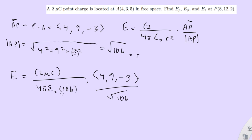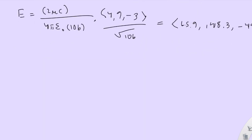You see how there's no variables here? We can just solve this. And when you solve it, punching it into a calculator, you will get 65.9, 148.3, and negative 49.4. Okay, so now we have E in Cartesian coordinates. This is cart coords.